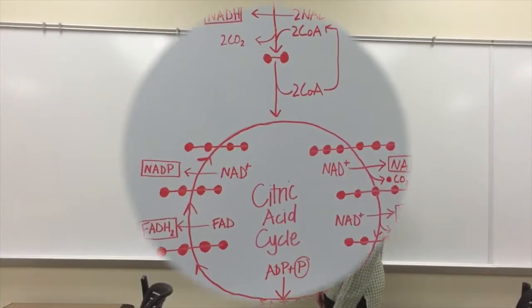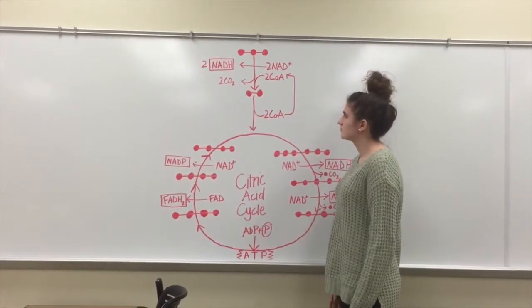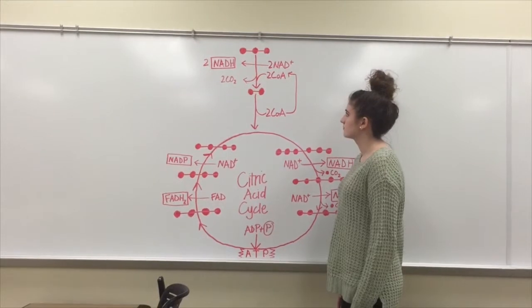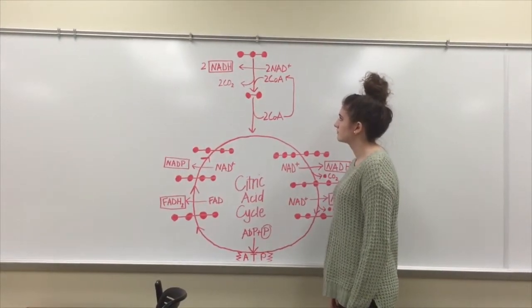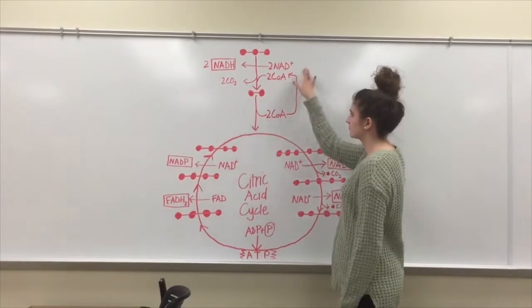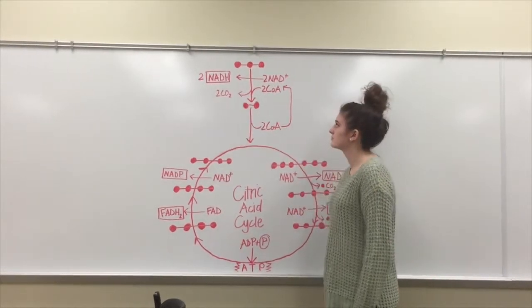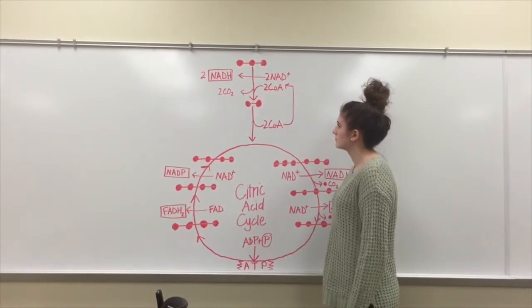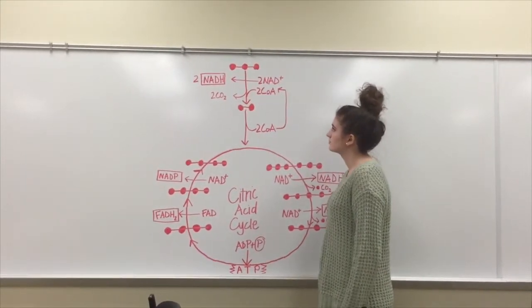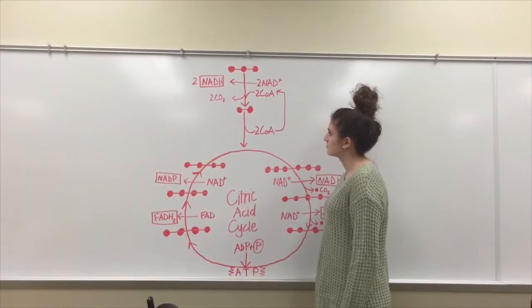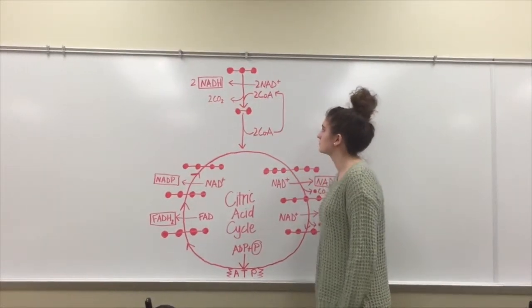The preparatory reaction takes place in the matrix of the mitochondria. Pyruvate is oxidized and a CO2 molecule is given off. This is part of the CO2 we breathe out. NAD+ accepts electrons and hydrogen ions, forming NADH. The product, a two-carbon acetyl group, is attached to coenzyme A, forming acetyl coenzyme A. Therefore, per glucose molecule, the outputs are two CO2, two NADH, and two acetyl coenzyme A's.